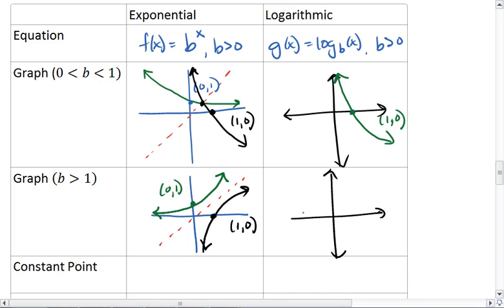Thus, the logarithmic graph passes again through the point, but it has this behavior.